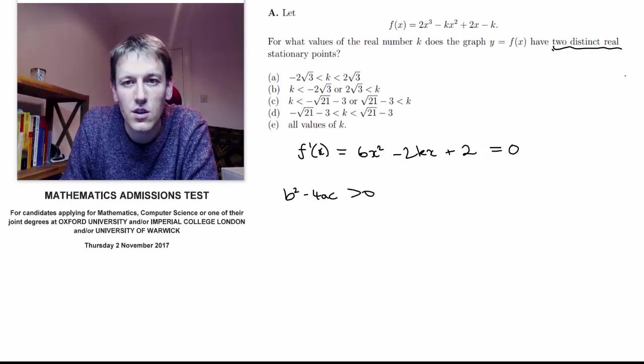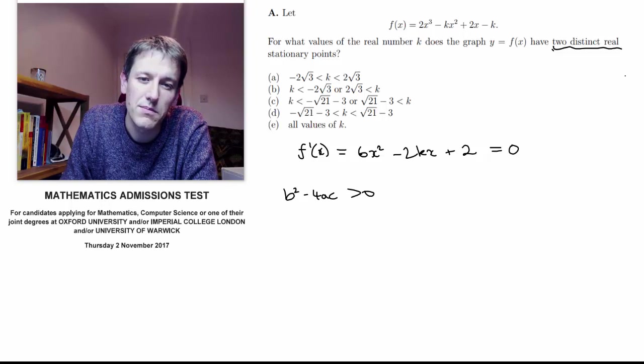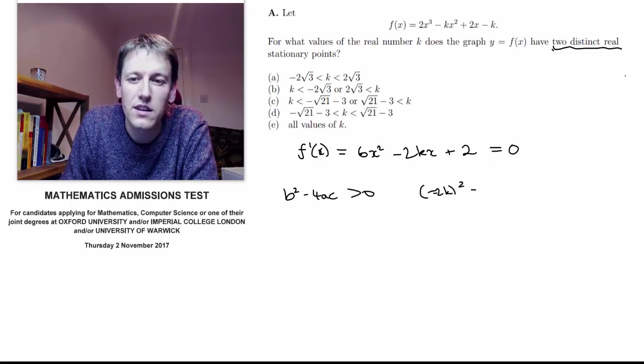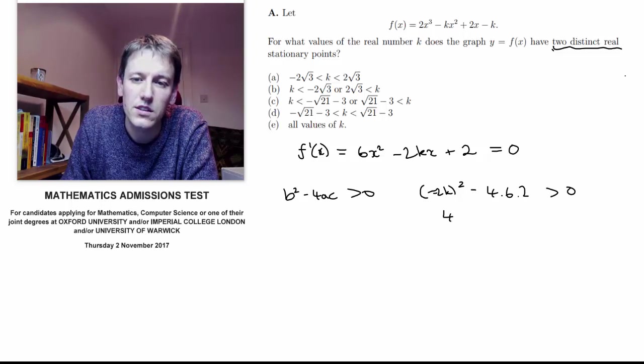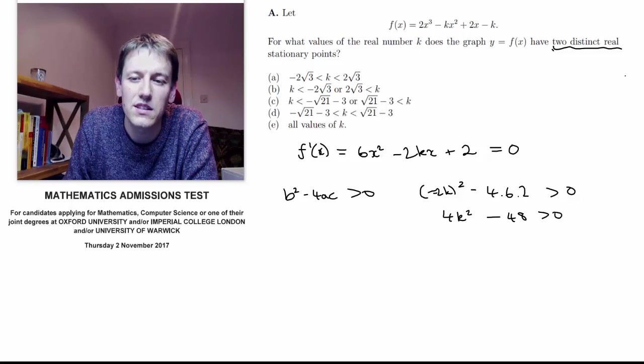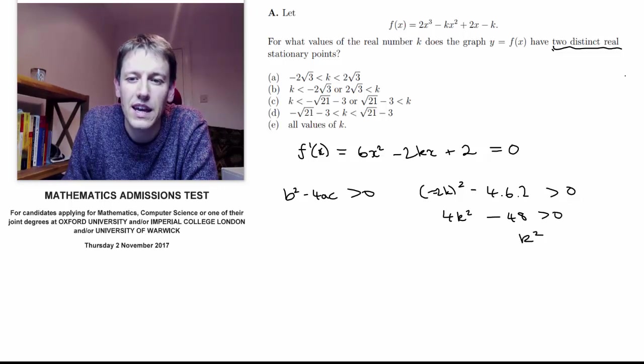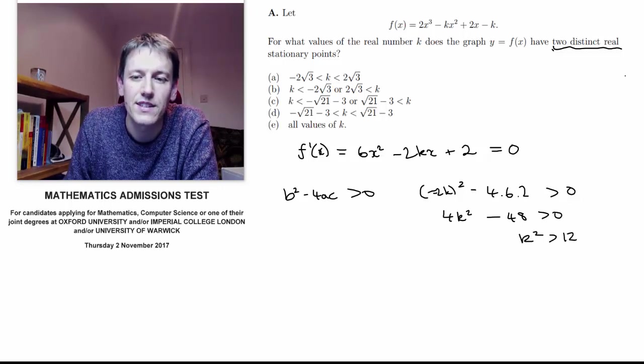So here the discriminant of this quadratic, the b is minus 2k, so that's minus 2k squared, minus 4 times 6 times 2. I want that to be bigger than zero, so that's 4k squared minus 48 is bigger than zero. That gives us k squared has to be greater than 12.